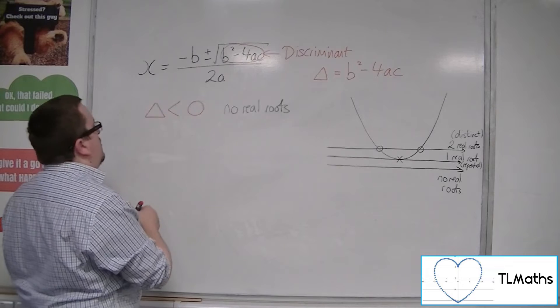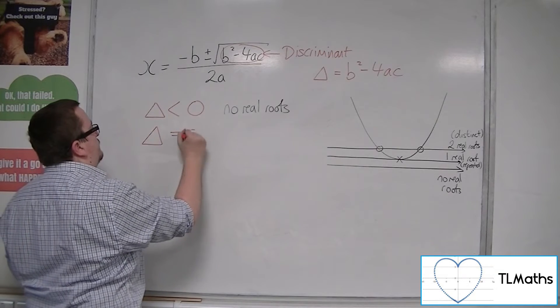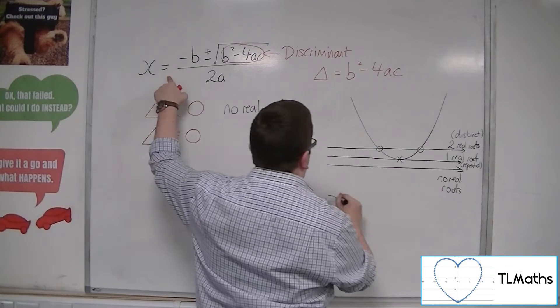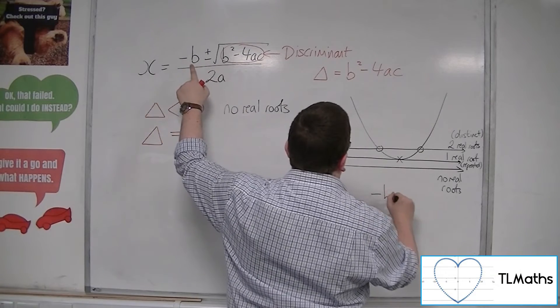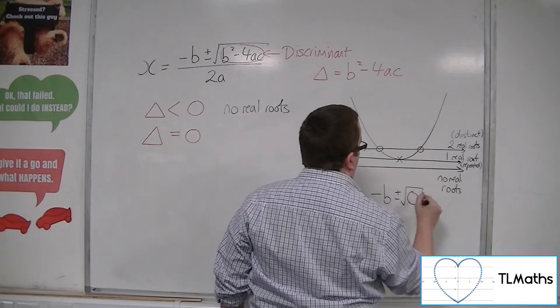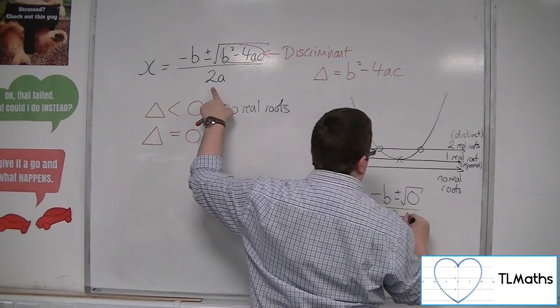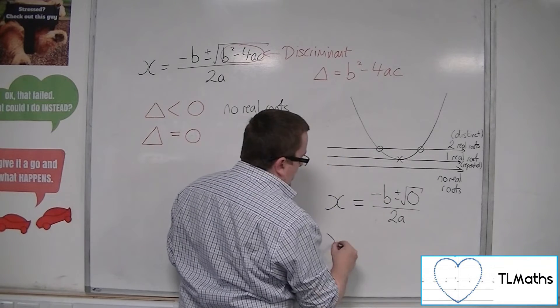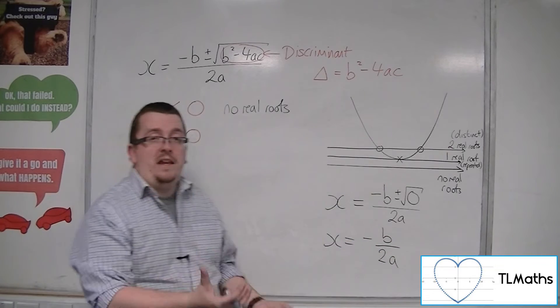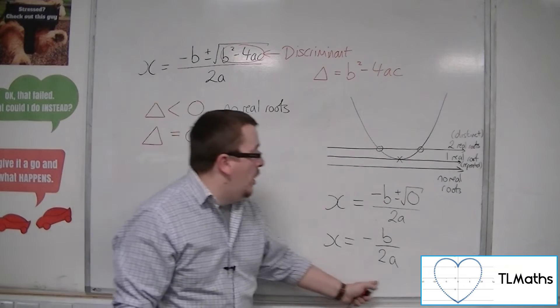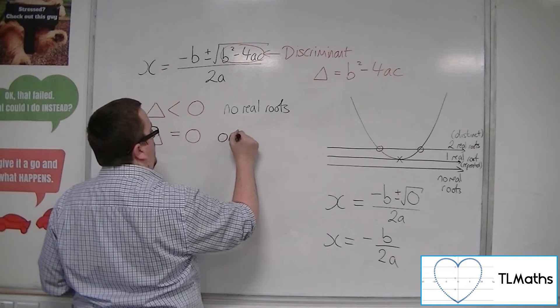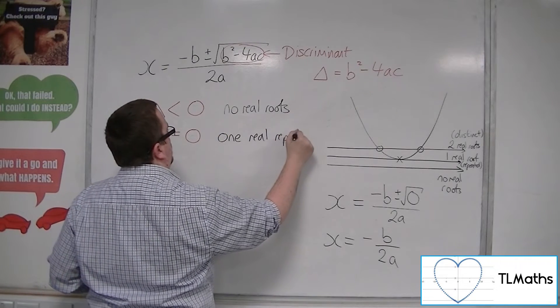Now if that discriminant is equal to 0, what we get is that we have x equals minus b, plus or minus, well that discriminant is 0. So the square root of 0, all over 2a. Now the square root of 0 is just 0, so that means that x is equal to minus b over 2a. And so because a and b can only take on singular values, there is only one solution, one real root. So one real, repeated root.